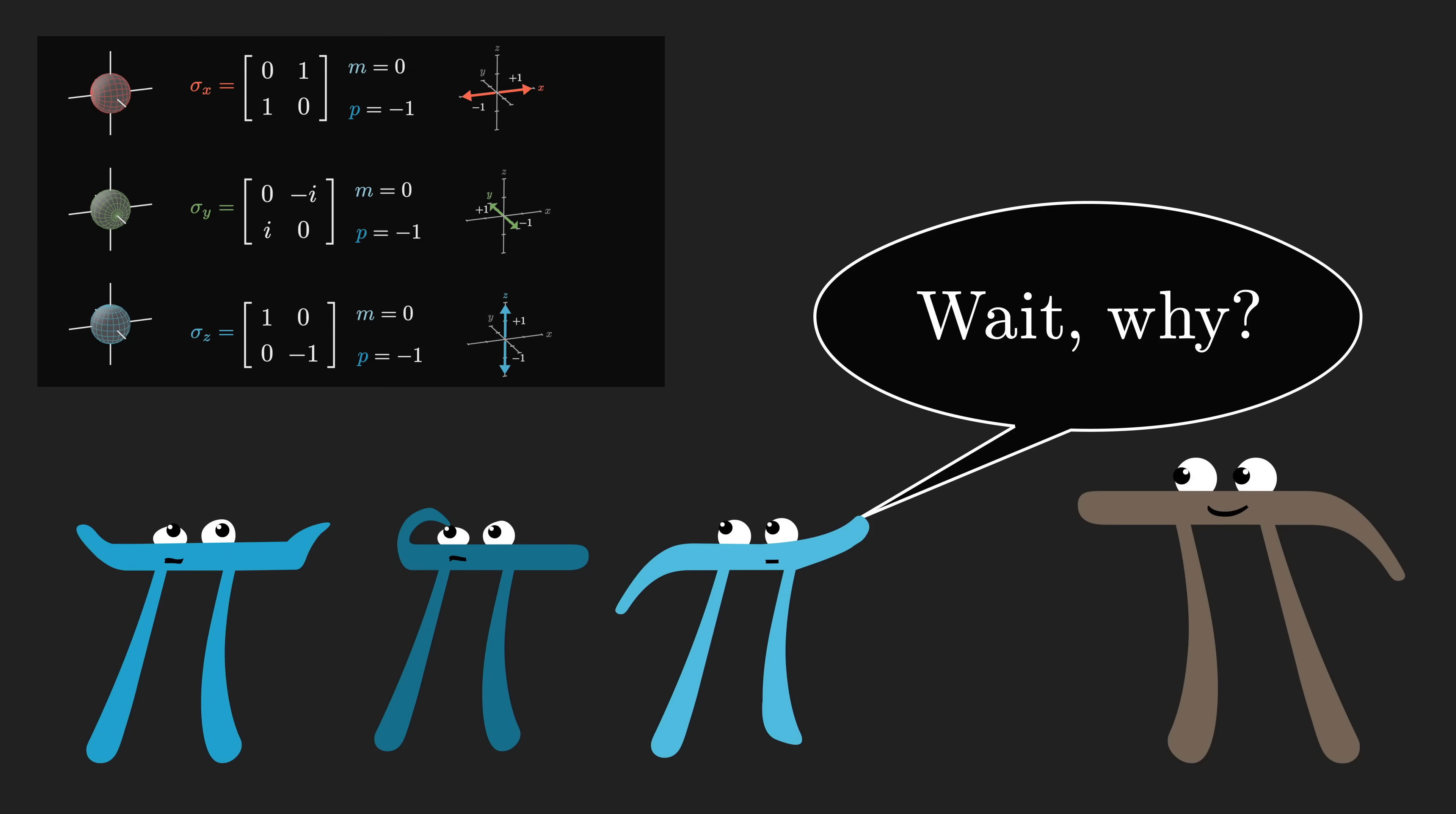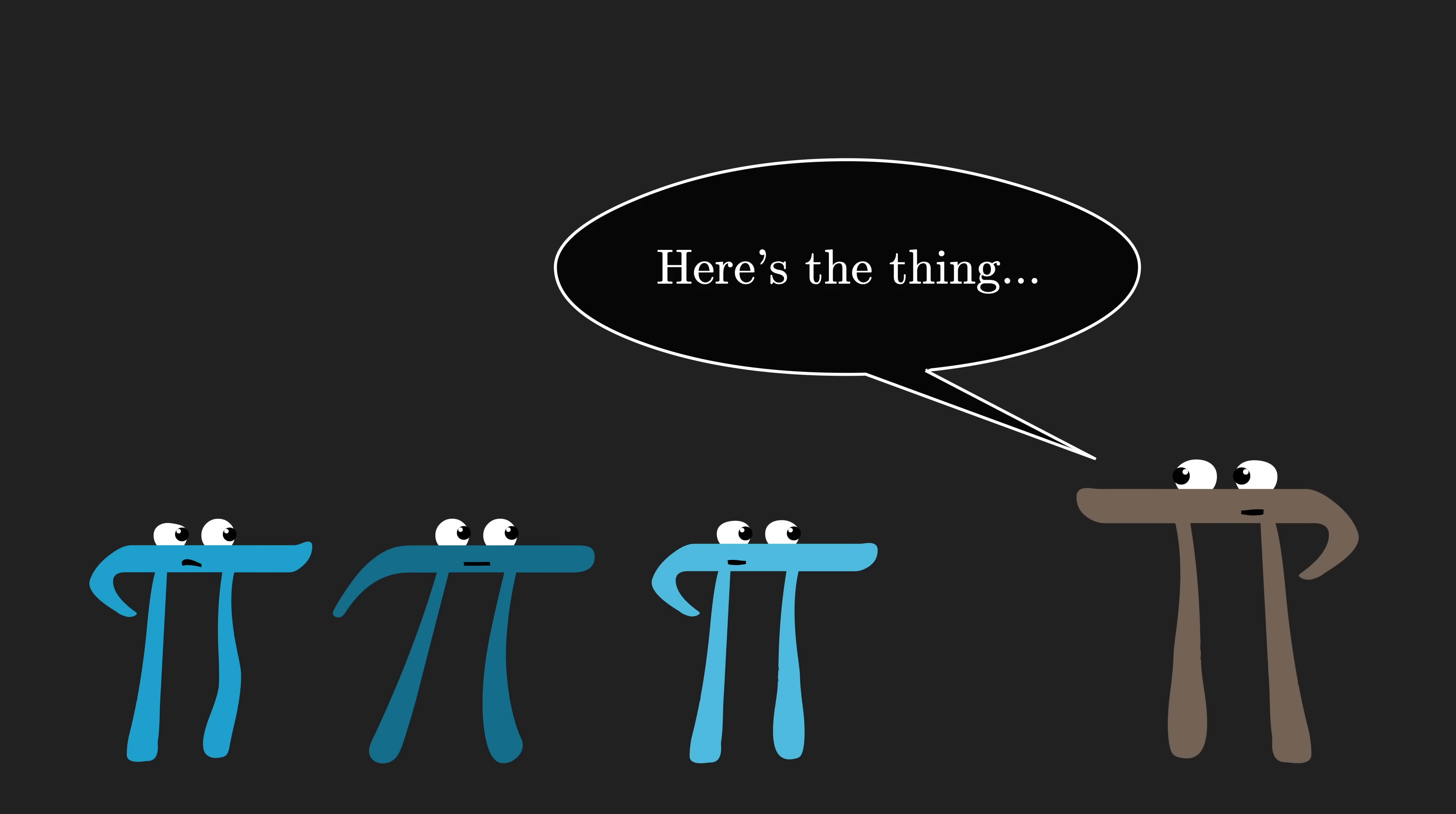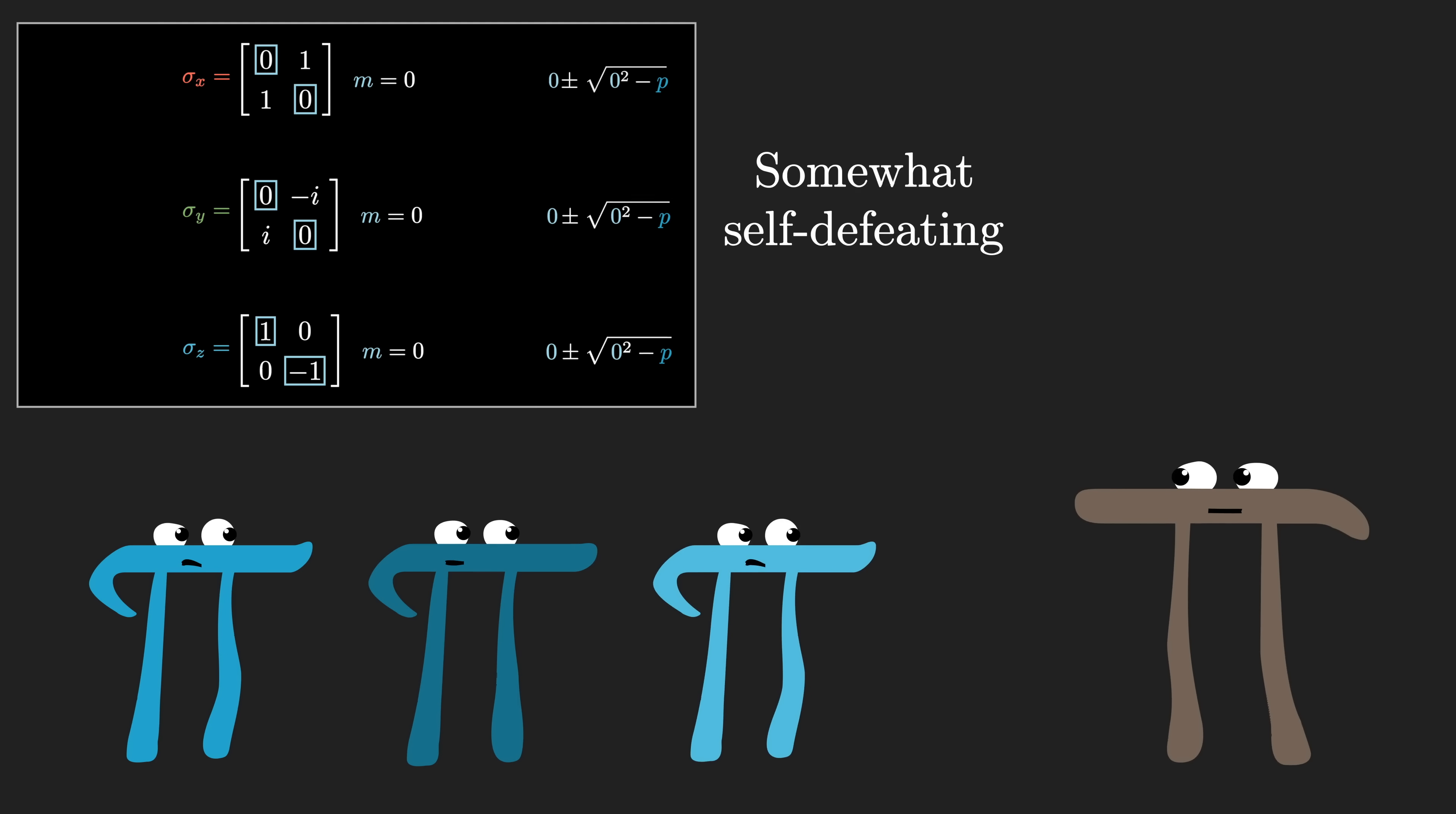You know, it's funny. I wrote this section because I wanted some case where you have two-by-two matrices that aren't just toy examples or homework problems, ones where they actually come up in practice, and quantum mechanics is great for that. But the thing is, after I made it, I realized that the whole example kind of undercuts the point that I'm trying to make.